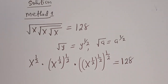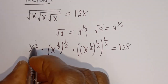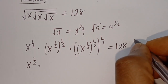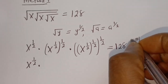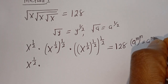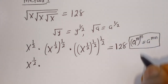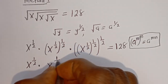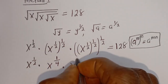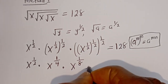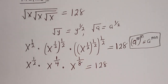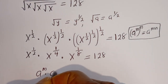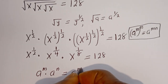Take note that if you have a to the power of m to the power of n, this is equal to a to the power of m times n. So the second term becomes s to the power of 1/2 times 1/2, that is 1/4. And the third term becomes s to the power of 1/2 times 1/2 times 1/2, that is 1/8. Also note: a to the power of m multiplied by a to the power of n equals a to the power of m plus n.